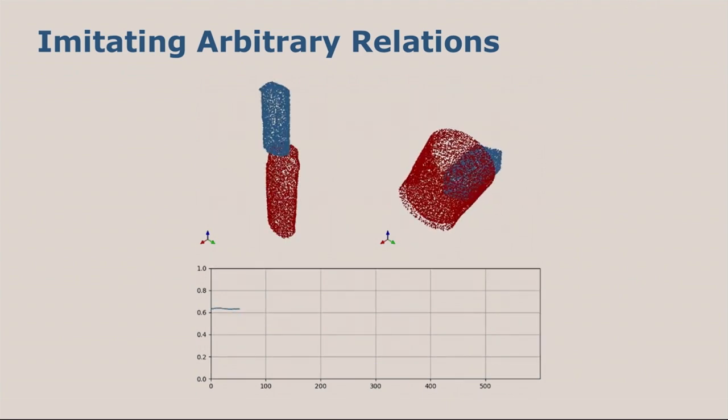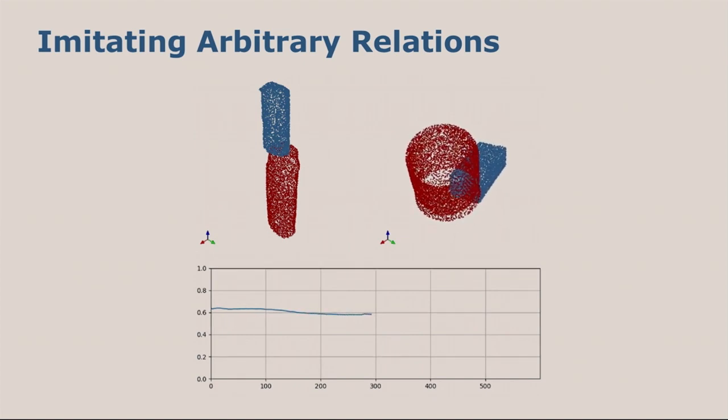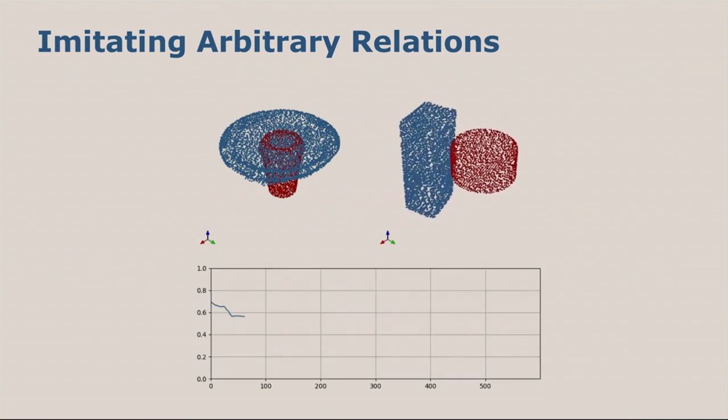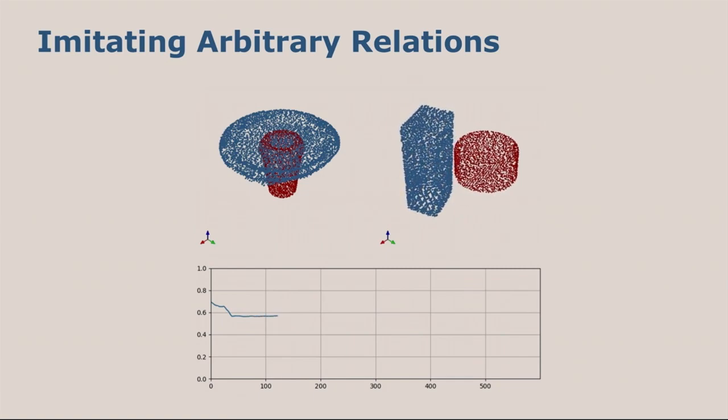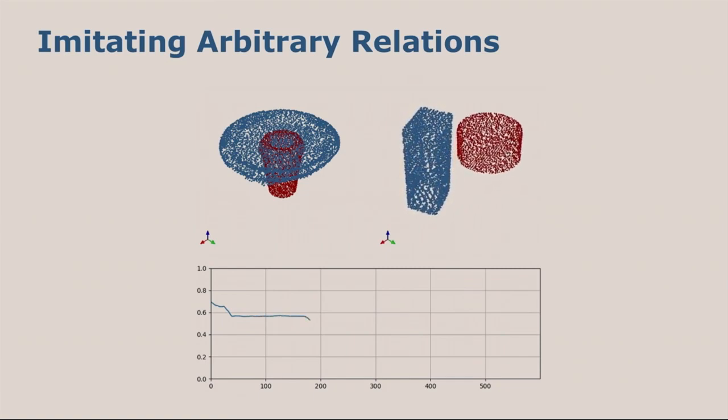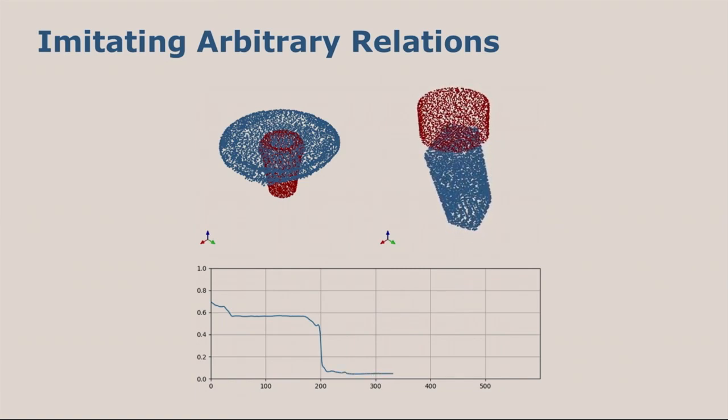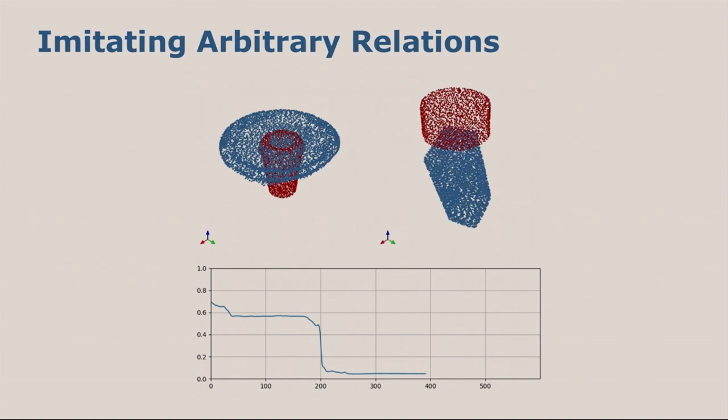However, one problem is that we can get stuck in a local minima during optimization, which means the relation is not successfully generalized. Another thing we need to consider is that we didn't account for physical stability. What can happen is that the embodied spatial relation is successfully imitated, but the underlying scene is not physically stable. In this case, the blue box is tilted and the scene would collapse if it was a real scene.